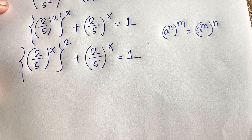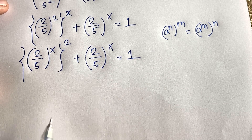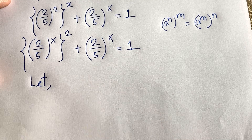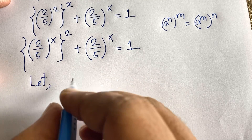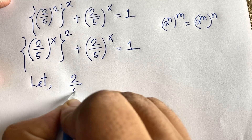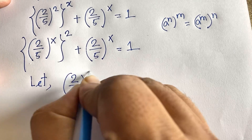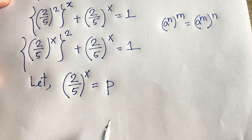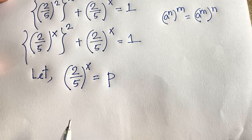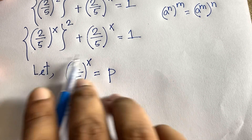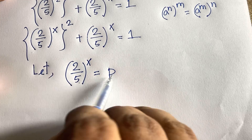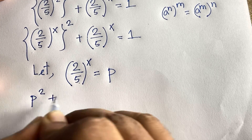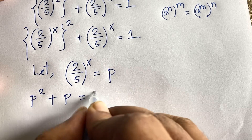Since both terms are the same, let p = (2/5)^x. Substituting the value of p into the equation, we find p² + p = 1.